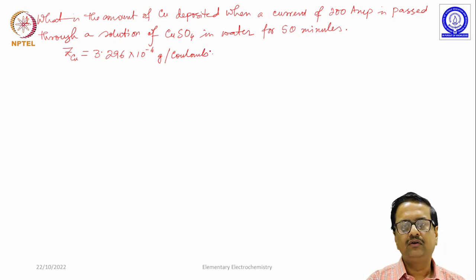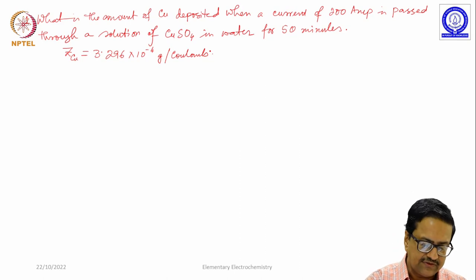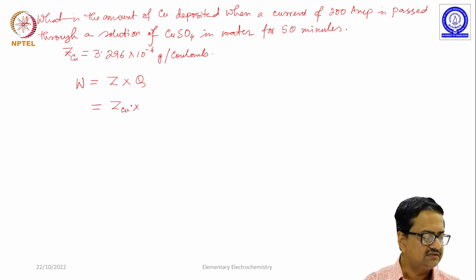What we know from Faraday's first law is that w equals the electrochemical equivalent z times the amount of electricity passed q. In this particular case it should be z_Cu, and q is nothing but the amount of current passed in amperes times time in seconds.